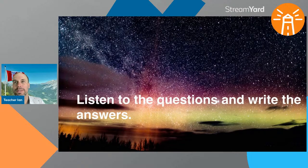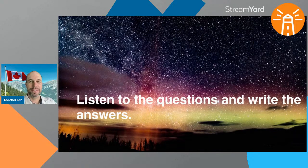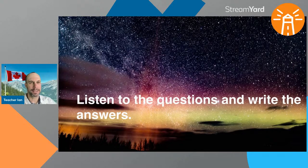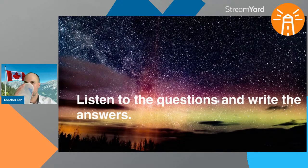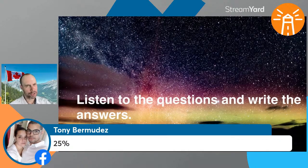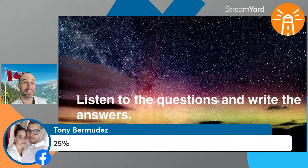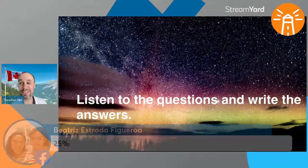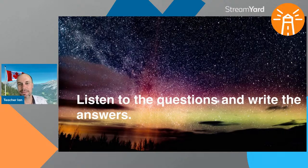Number five: Canada is home to what percentage of the world's wetlands? Tony got it, Alyssa got it, Beatrice got it, Mario got it — 25%. Amazing, great work.